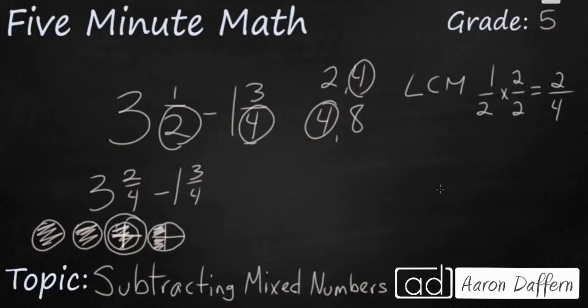And if I do that, I'm going to end up with 2 wholes, 1, 2, and then 1, 2, 3, 4, 5, 6 fourths. And so 2 and 6 fourths, which looks strange because it's an improper fraction, is the same as 3 and 2 fourths. But if I take that 2 and 6 fourths, now I can have my subtraction problem. Because 6 fourths minus 3 fourths is going to be 3 fourths. And 2 minus 1 is going to make 1. So my answer is going to be 1 and 3 fourths.